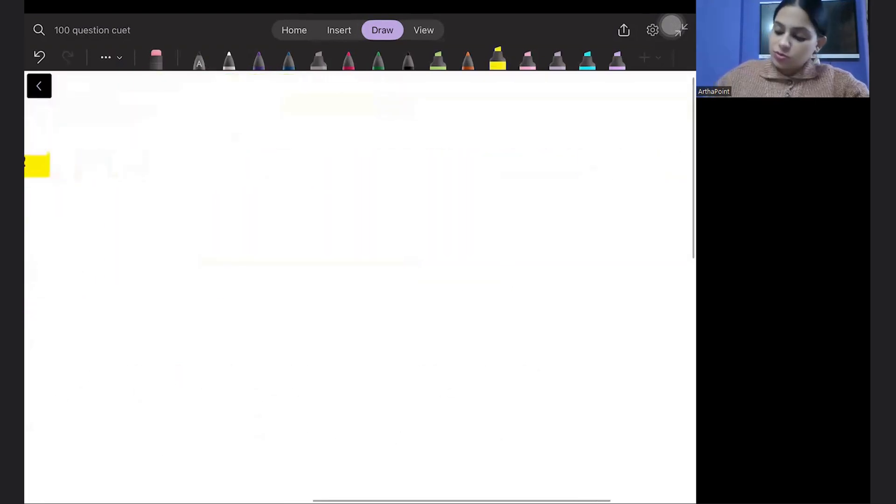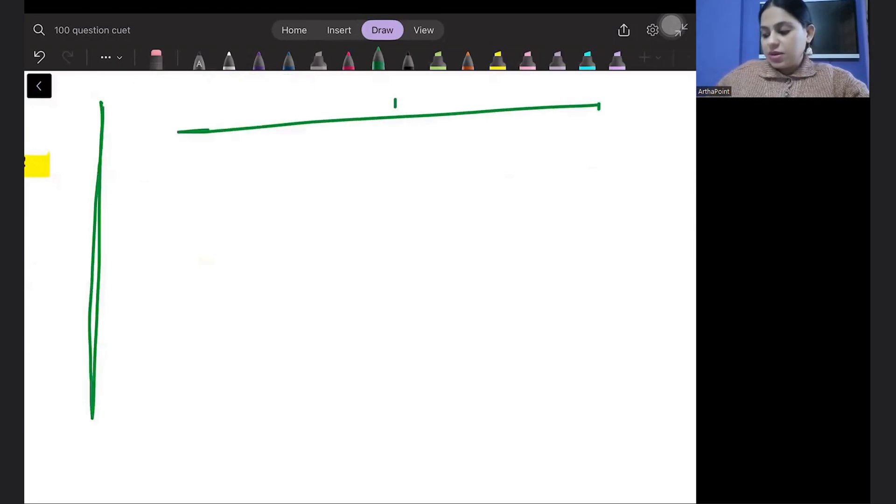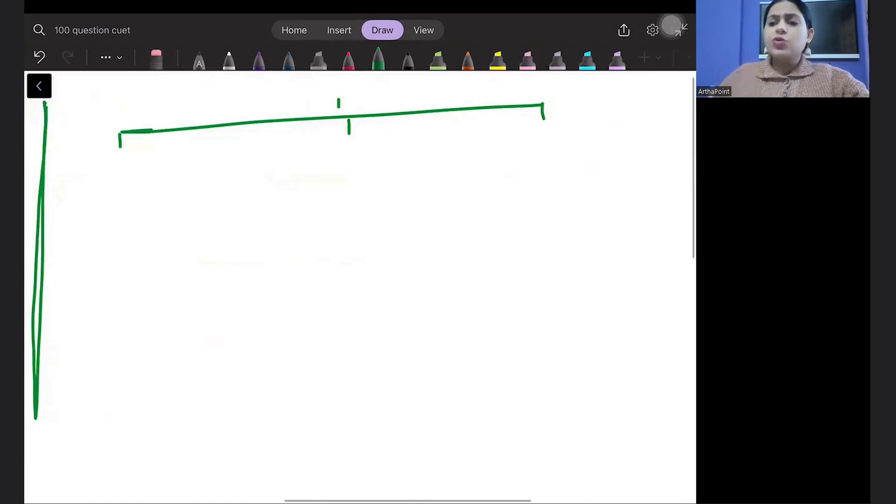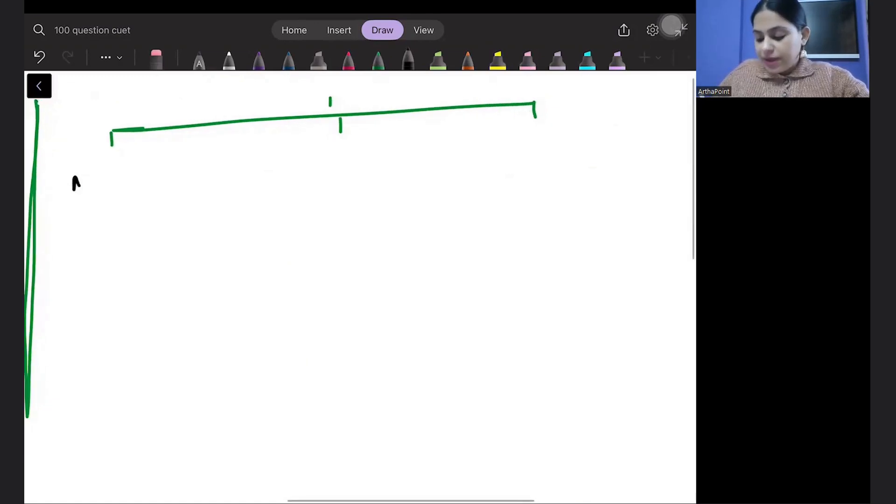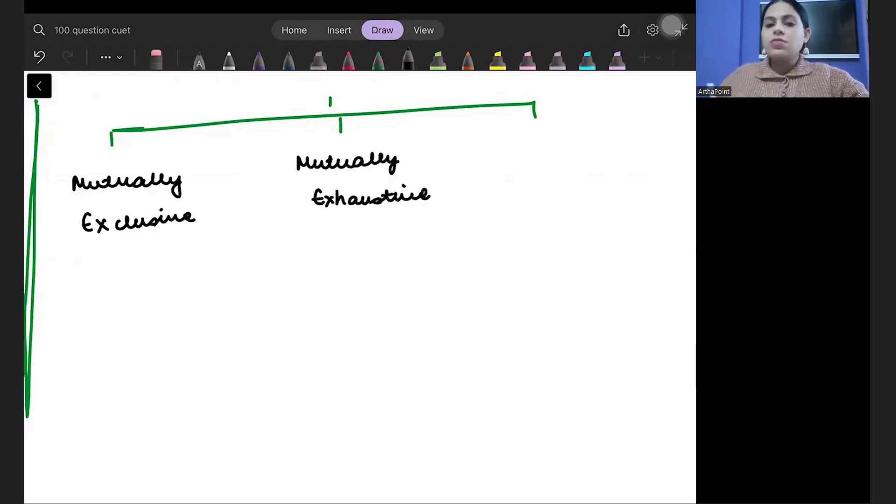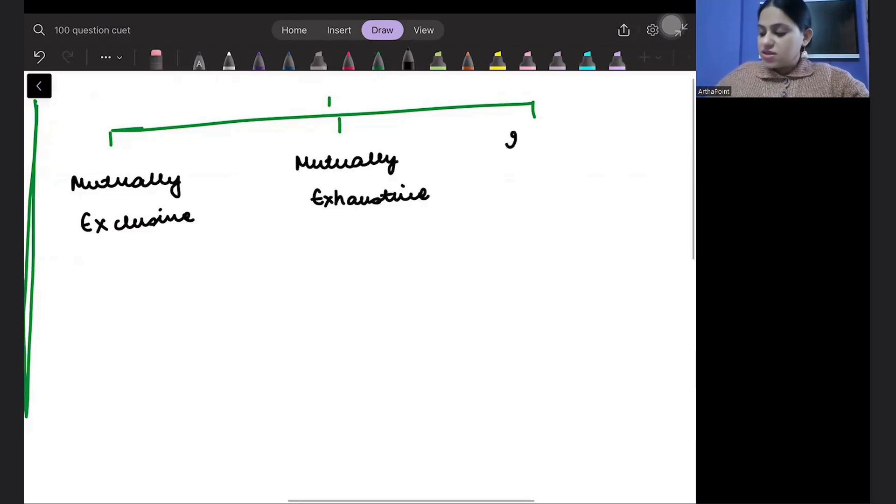So beta, first I want to just tell you, we should be clear with three kinds of definitions. First we say mutually exclusive, next is known as mutually exhaustive, and next is known as independent.